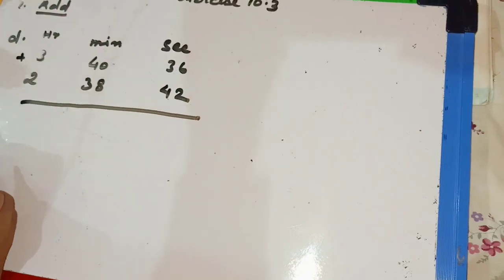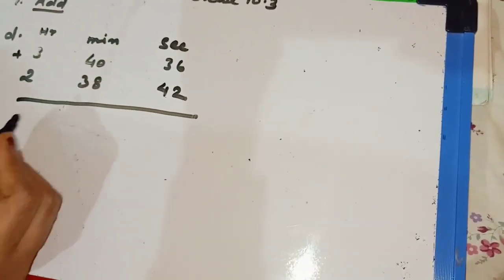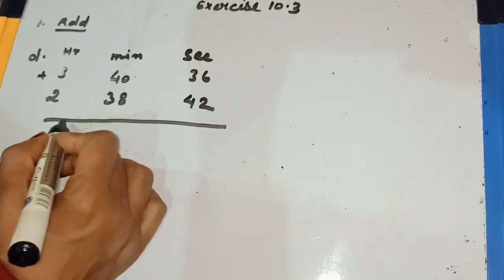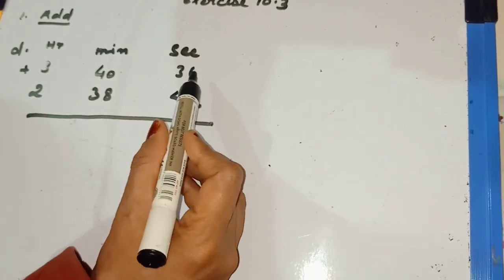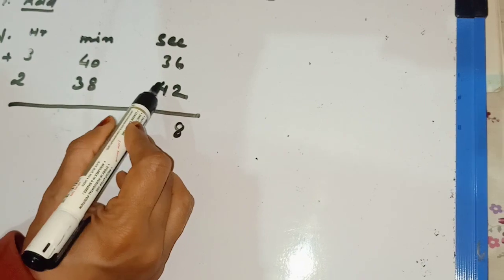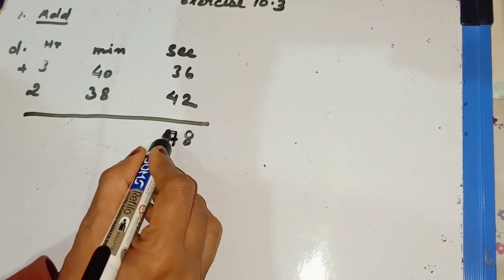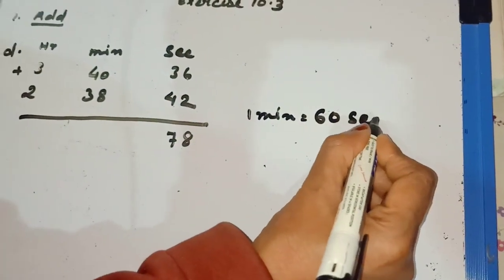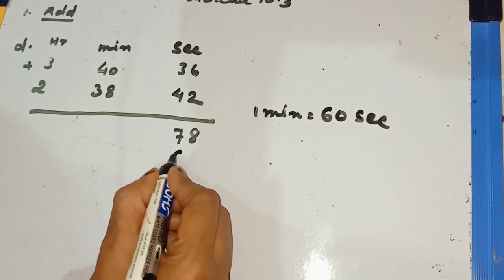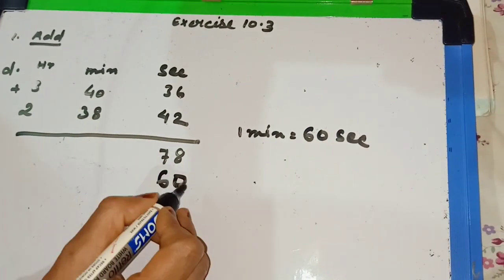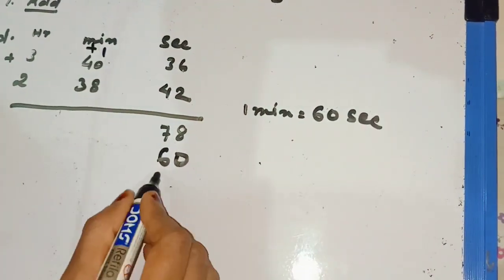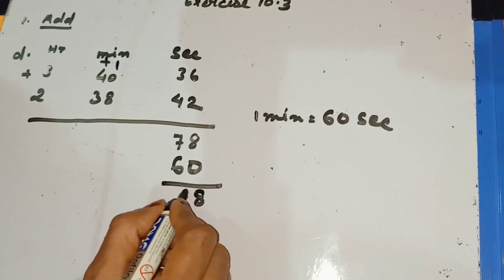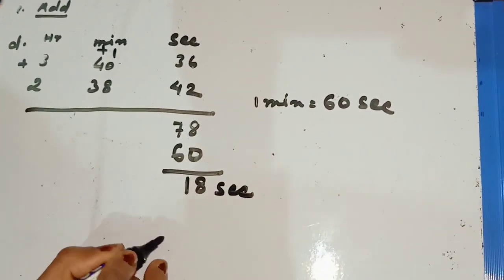Children, look carefully. Question D is the same as question A but with seconds included. We will do this sum in 2 steps. 6 and 2 is equal to 8, and 3 and 4 is equal to 7, so the seconds total is 78. You know that 1 minute is equal to 60 seconds, so we subtract 60 because we are adding 1 minute. 8 minus 0 is 8 and 7 minus 6 is 1, so the seconds are 18.